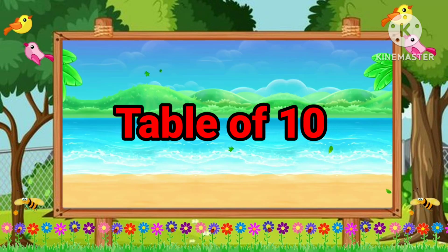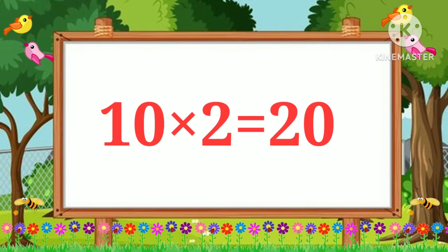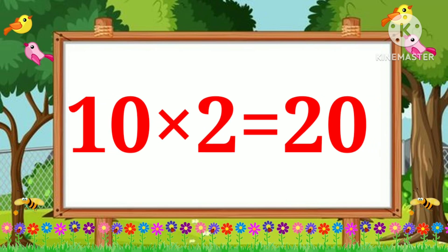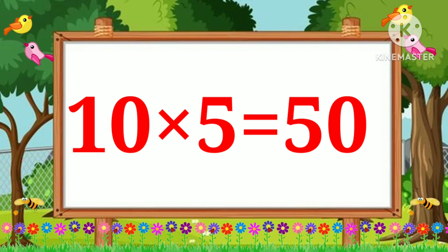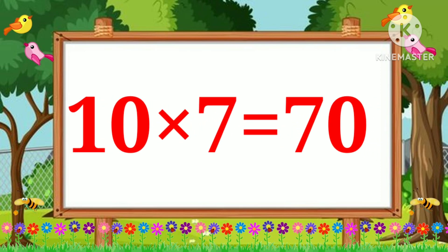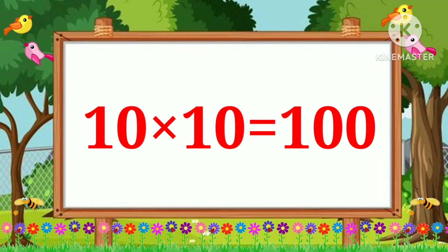Table of Ten. Ten ones are ten. Ten twos are twenty. Ten threes are thirty. Ten fours are forty. Ten fives are fifty. Ten sixes are sixty. Ten sevens are seventy. Ten eights are eighty. Ten nines are ninety. Ten tens are one hundred.